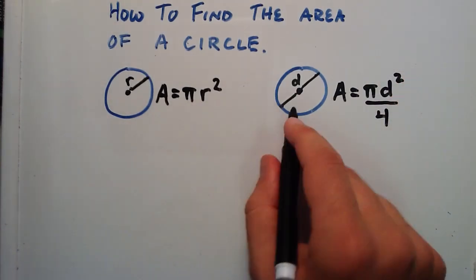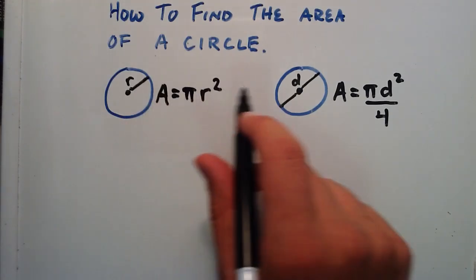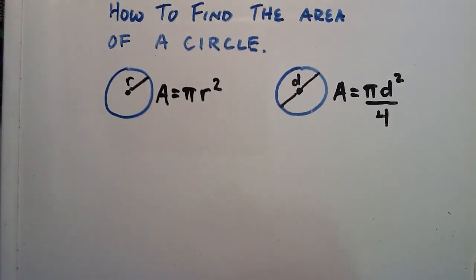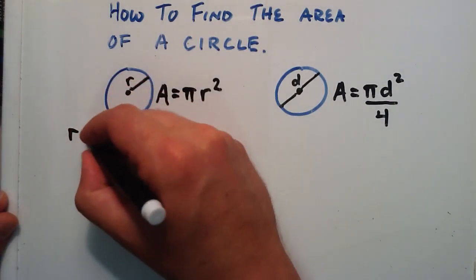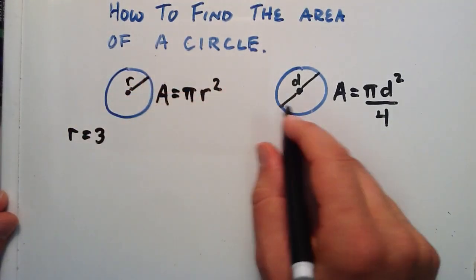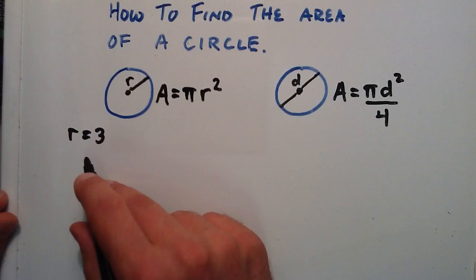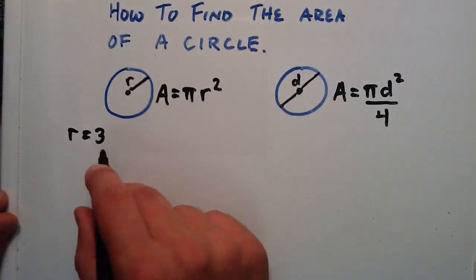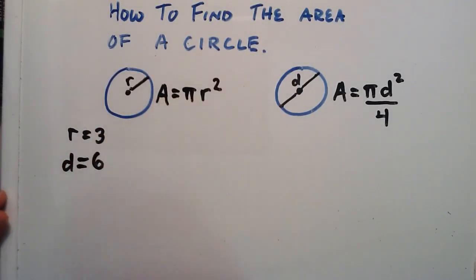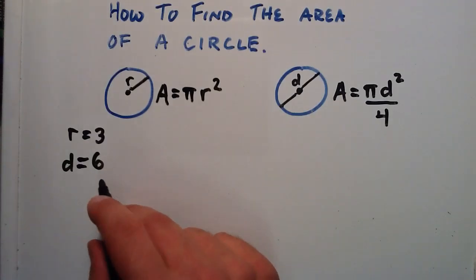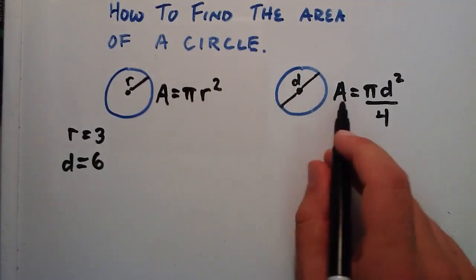Let's assume that both of these circles are the exact same circle. Because they're the exact same, they both have equal radiuses and equal diameters. Let's assume that our radius is equal to 3. And because the diameter is twice as big as the radius, twice 3 is 6. So our diameter must be 6. We're going to use these values to demonstrate that you can use either the radius or the diameter and their corresponding equations to find the area inside a circle.